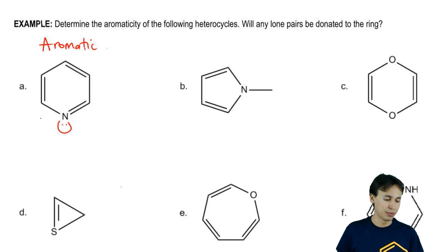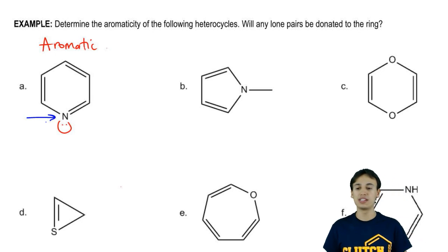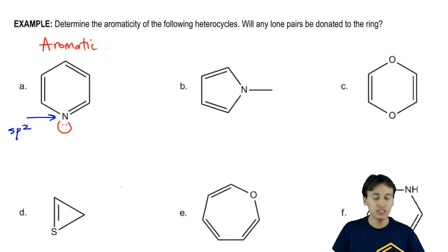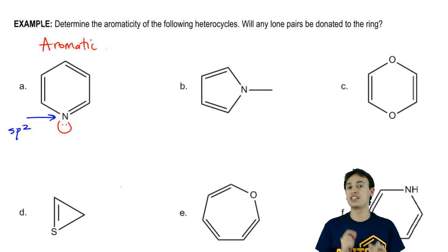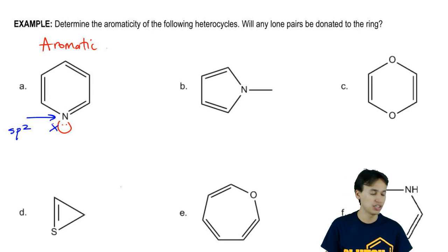First of all, let's look at the hybridization of this nitrogen. What is that hybridization? That hybridization is sp2. I told you guys explicitly that you're never going to donate a lone pair unless it's sp3. This one cannot donate so I'm not even going to consider it.